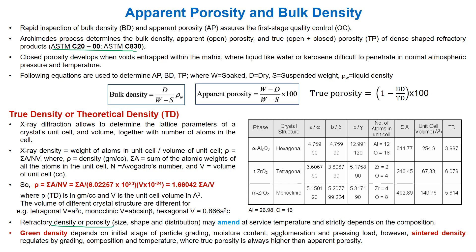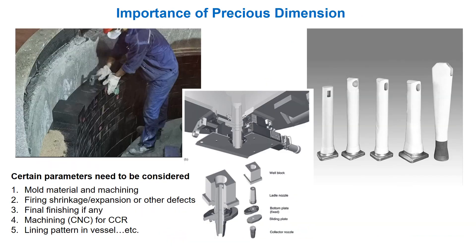Precise dimension is very important, and certain parameters need to be considered: mold material, machining, firing shrinkage/expansion, or other defects, final finishing, and machining for specific configurations like CCR lining patterns in vessels. A perfect magnesia carbon brick completes the working lining, with a definite backup lining made of LCC70 installed behind it. In the slide gate system, ACN blocks — all with perfect dimensions — are required to obtain hassle-free steel production.